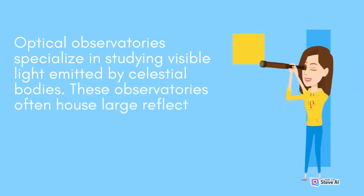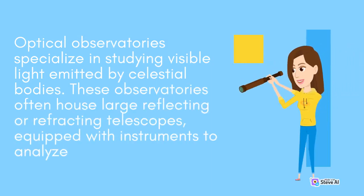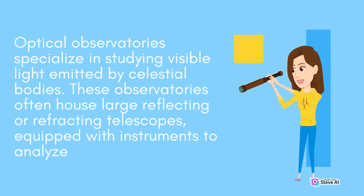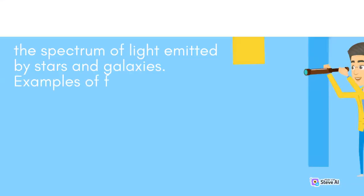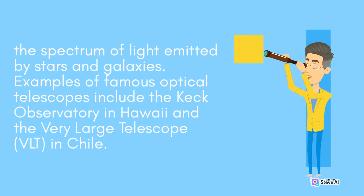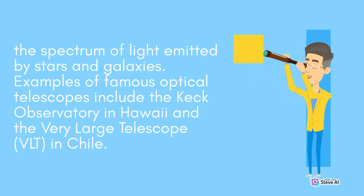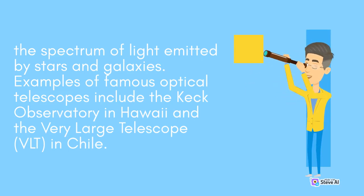Optical observatories specialize in studying visible light emitted by celestial bodies. These observatories often house large reflecting or refracting telescopes, equipped with instruments to analyze the spectrum of light emitted by stars and galaxies. Examples of famous optical telescopes include the Keck Observatory in Hawaii and the Very Large Telescope (VLT) in Chile.